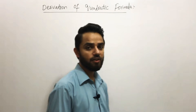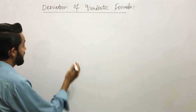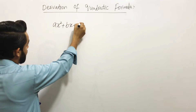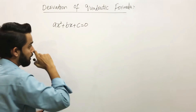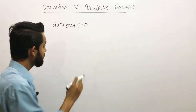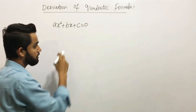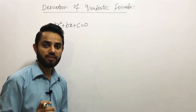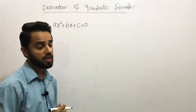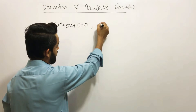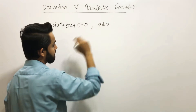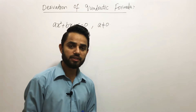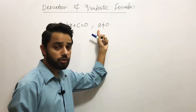What is the general form of a quadratic equation? It is ax² + bx + c = 0. Wherever you have this form, you will always see one condition written along with it: a is not equal to 0. Have you ever thought about why it is always written that a is not equal to 0?